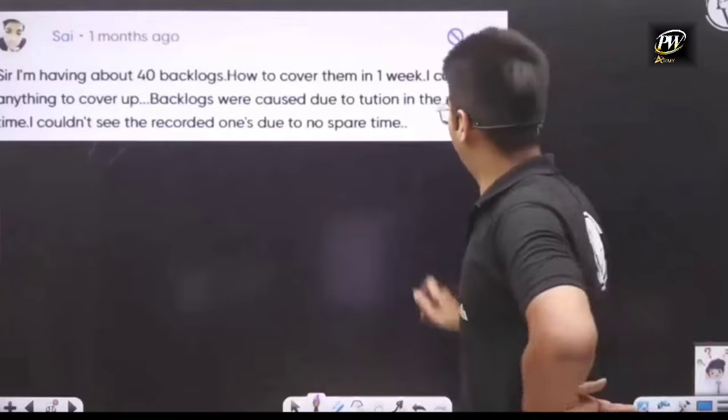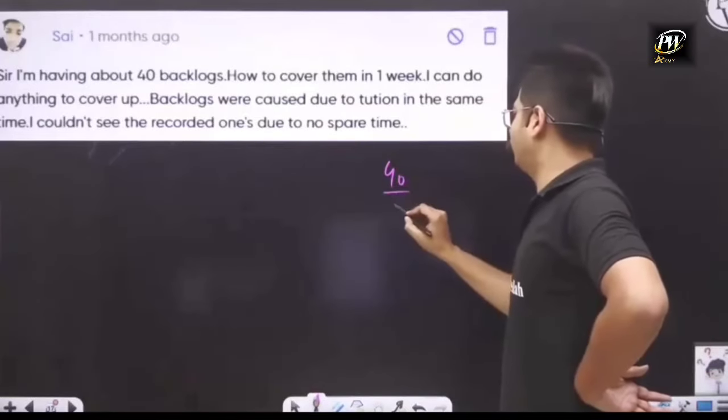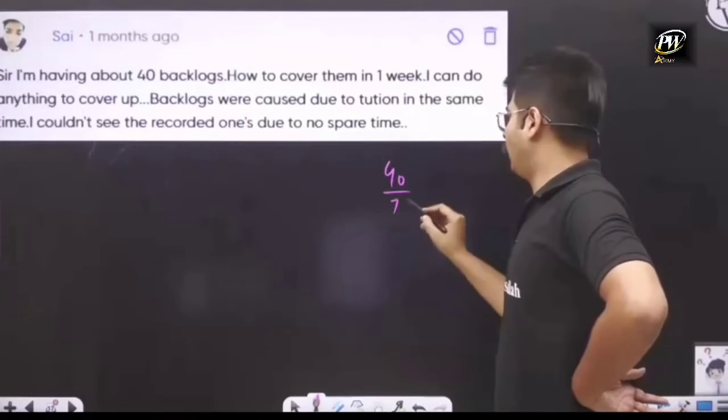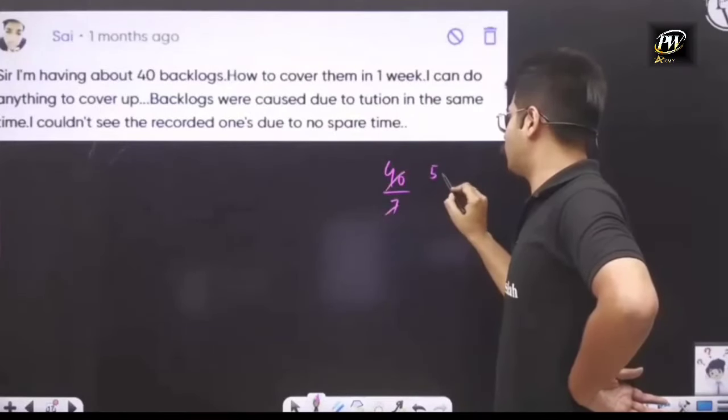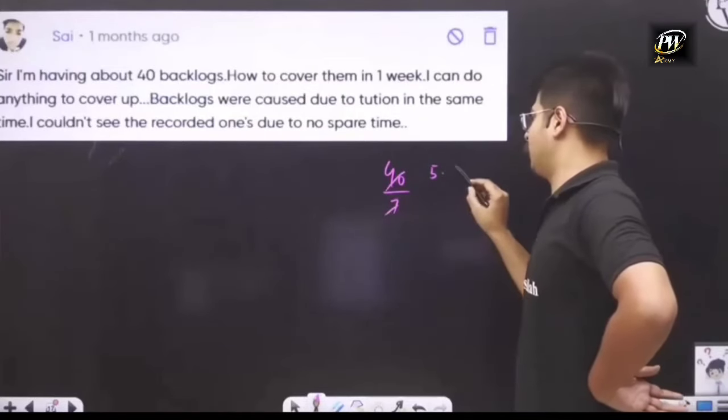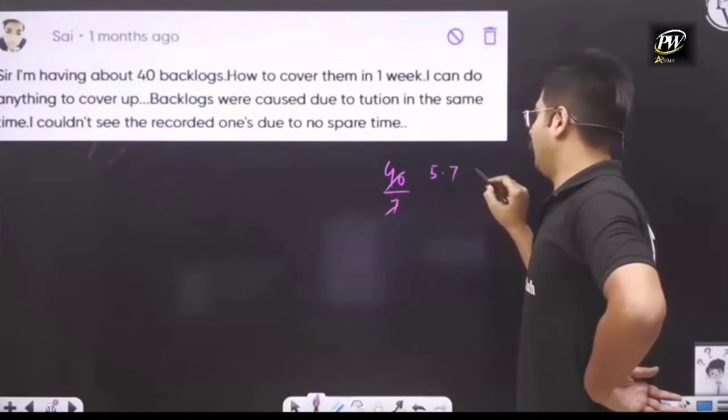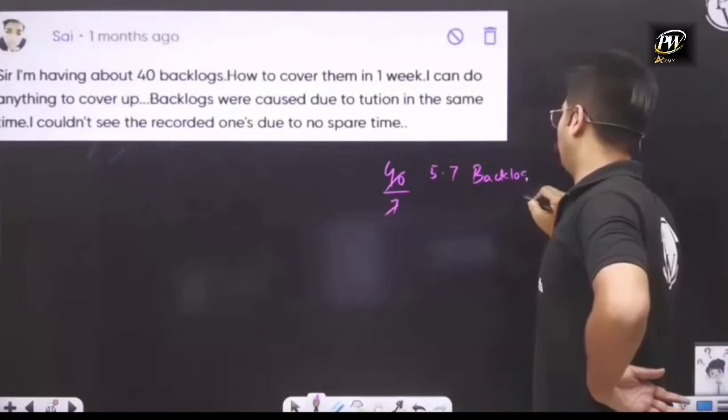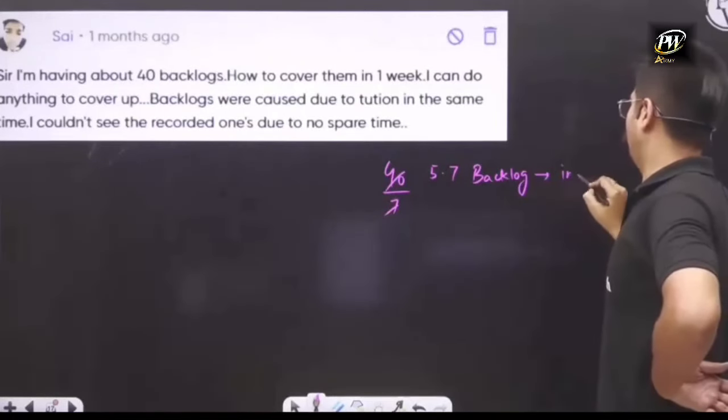Okay, so bro, you can divide 40 from 7, right? And every day you get... what is it? 5.7. Okay, 5.7 backlogs in a day, in one day.